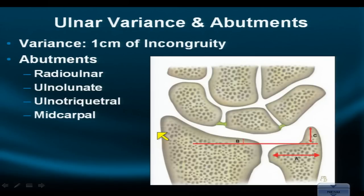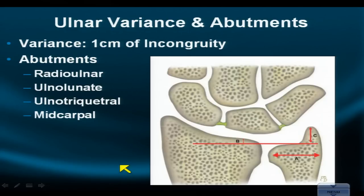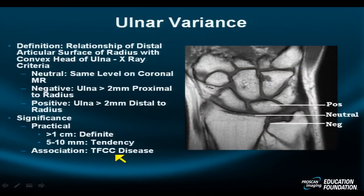These abnormalities in variance can lead to various abutment or impingement syndromes, like radial-ulnar, ulno-lunate, ulno-triquetral, and mid-carpal impingement syndromes. We'll see examples of these subsequently, but that's a story for another vignette.